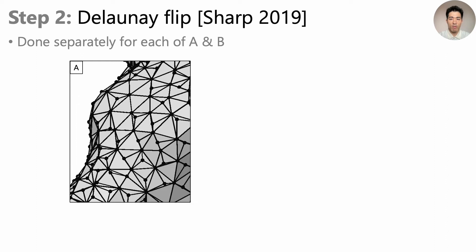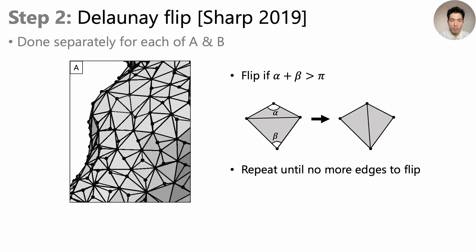The step 2 of our algorithm is the Delaunay Flipping, which was originally proposed by Sharp et al. And this is done separately for each of A and B, so we can forget about all the colors for now. The idea is very simple. For every edge, we look at its two opposite corners and sum the angles. If it's larger than pi, we flip the edge intrinsically.